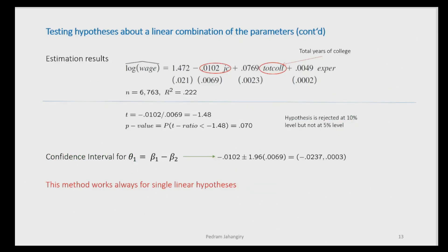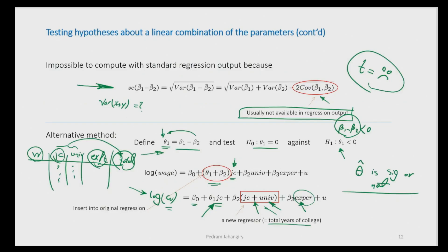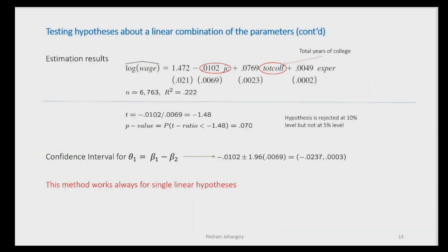I'll demonstrate this in R in our next face-to-face class. We're not doing anything special: we rewrite the model using theta and run a new regression — regressing log wage on junior college and total college plus experience. These are the new numbers from that regression. Theta is the coefficient on junior college in the new model. Now it's as if we're doing hypothesis testing for a single parameter theta, not a linear combination. The t-statistic is: (-0.01 minus 0) divided by the standard error.